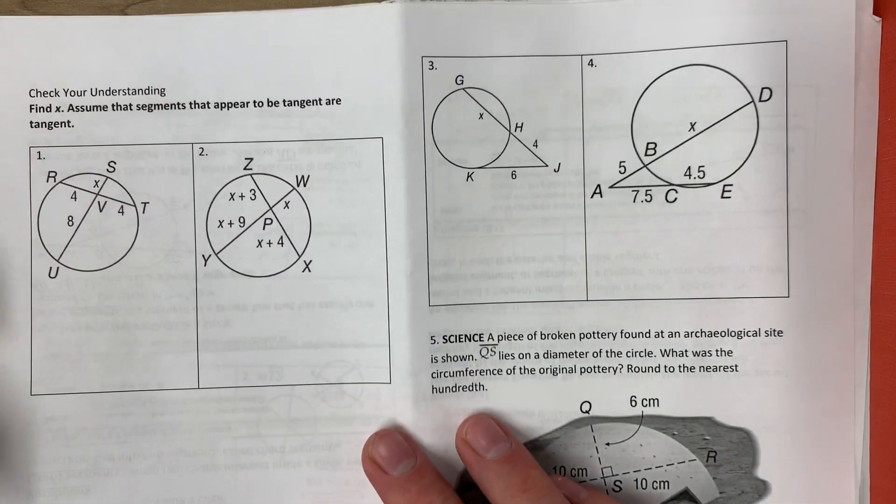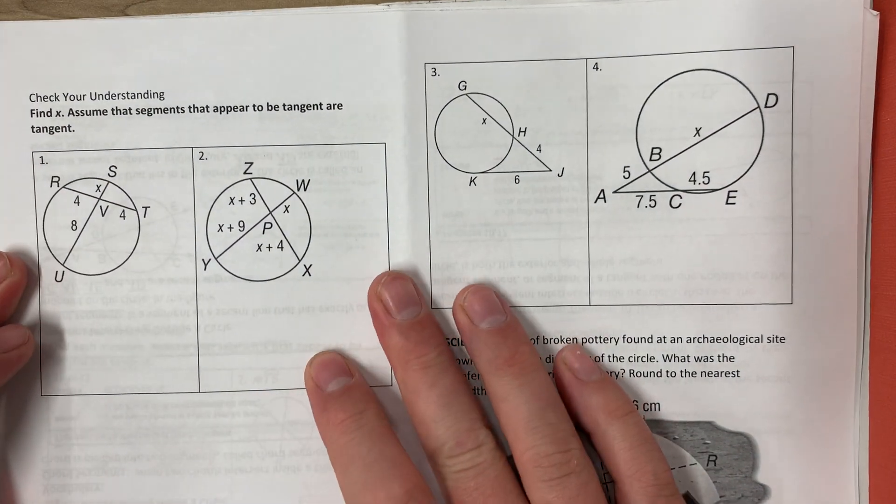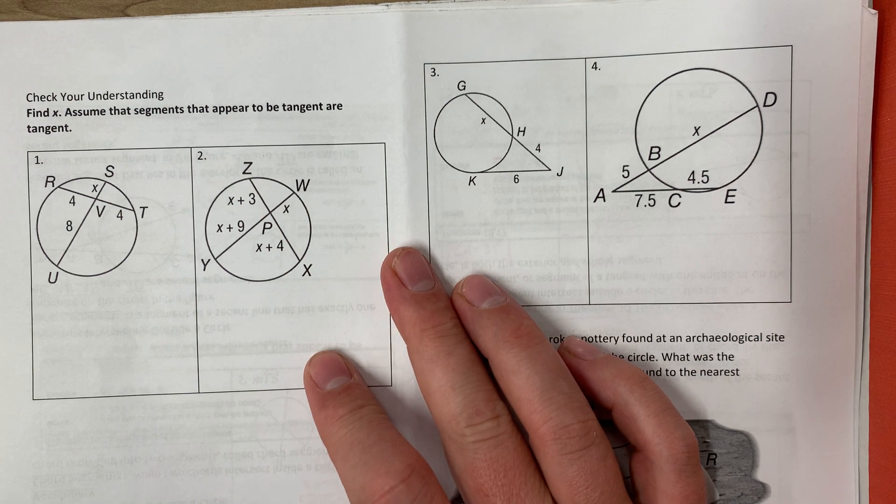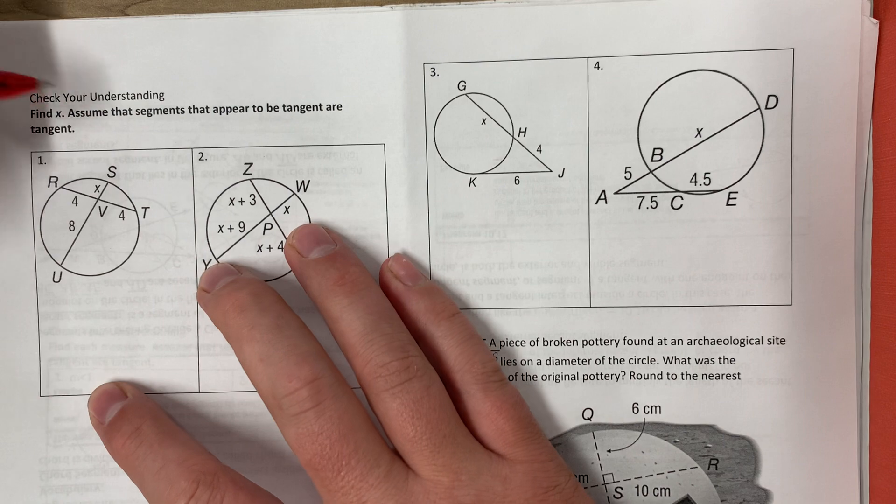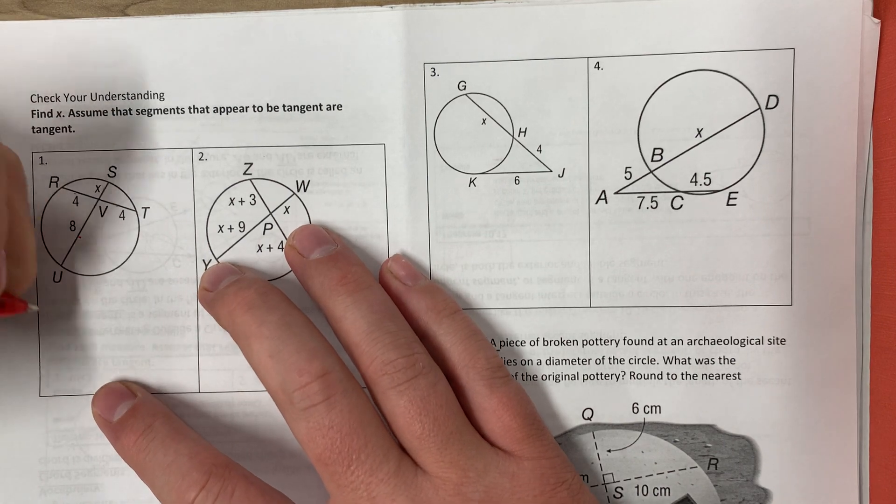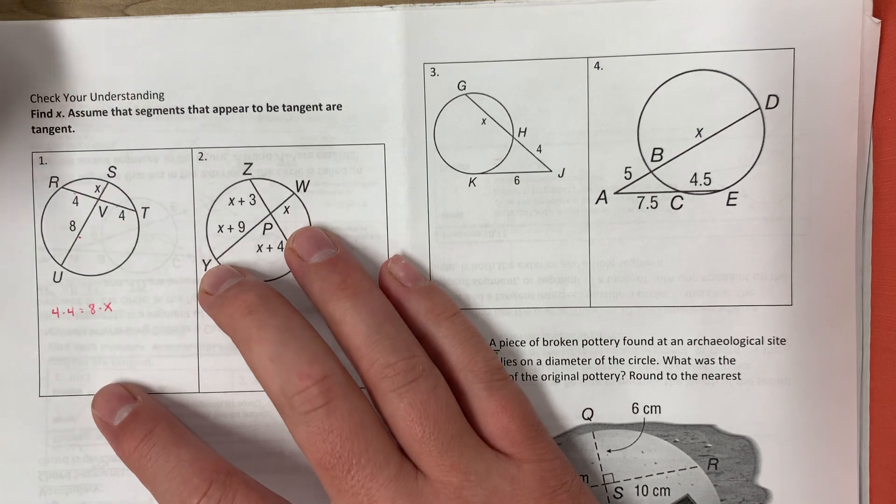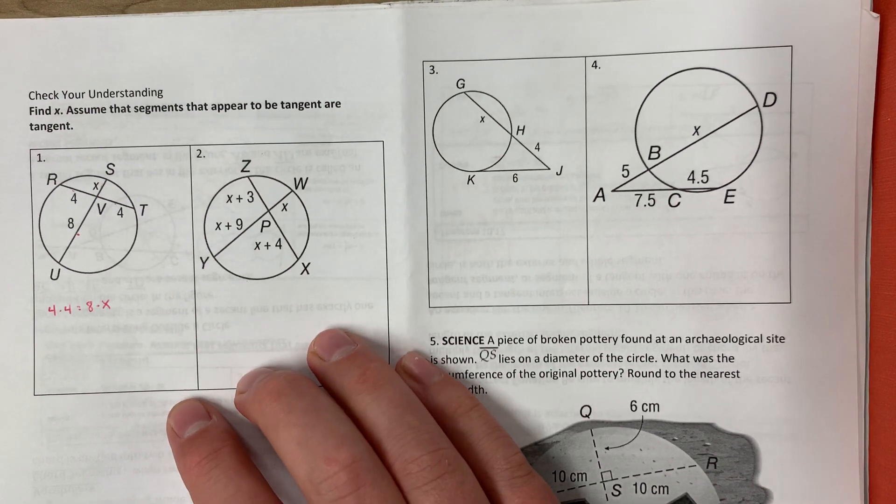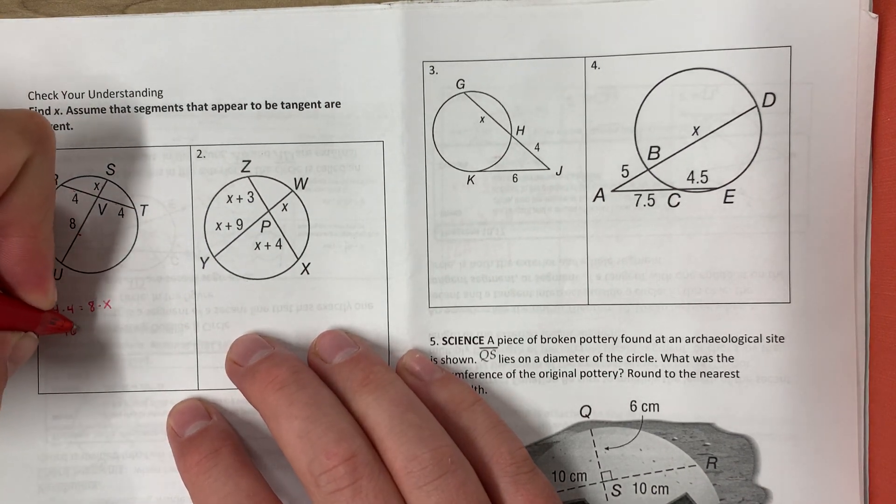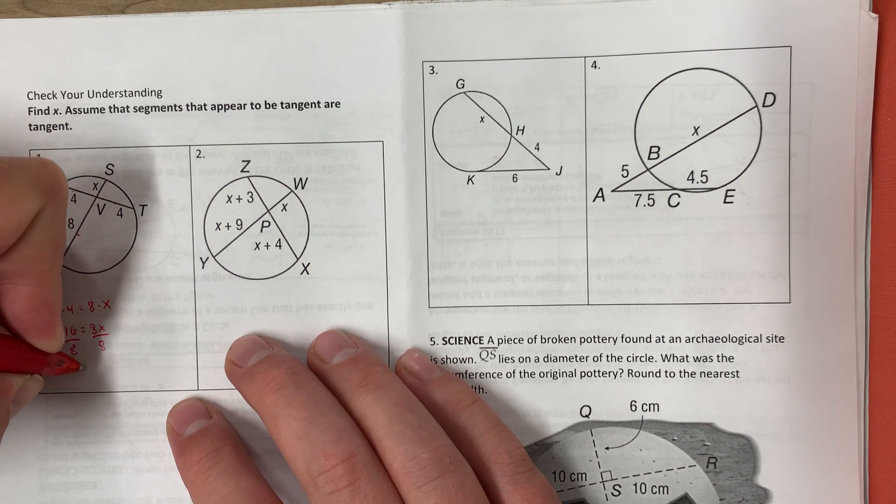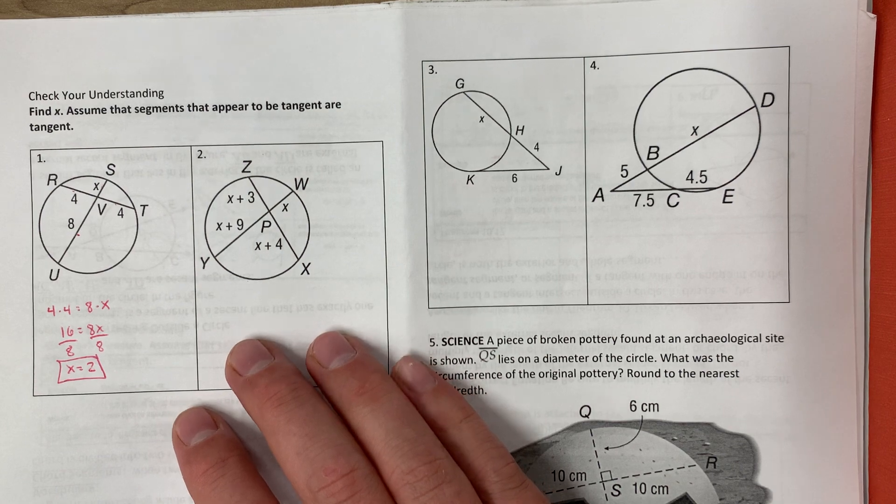Flipping to the other side here, we've got some examples. So let's find X. Assume that the segments that appear to be tangent are tangent. With our formula, we're going to be multiplying the two interiors. So we'll be multiplying 4 times 4 equals 8 times X. And we'll just solve for X. So I get 16 equals 8X, divided by 8, X equals 2.